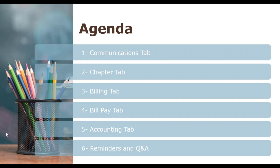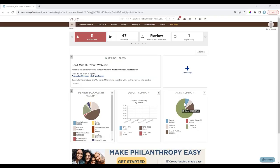Looking at our agenda today, we'll be going through each tab of Vault: the Communications tab, the Chapter tab where you'll do most of your status updating, the Billing tab where you'll spend most of your time especially if you're the treasurer, an overview of the Bill Pay tab (with a more in-depth webinar available), and the Accounting tab, followed by reminders and Q&A. Vault is OmegaFi's solution to manage your chapter's billing, member collections, and payments, allowing officers and advisors to glimpse into the everyday financial operations of your chapter.